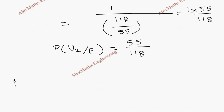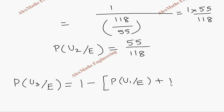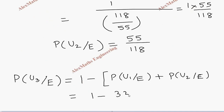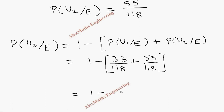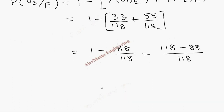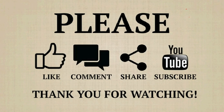For the third part, we don't need to repeat the full calculation. We use the complement: P(U3|E) = 1 - [P(U1|E) + P(U2|E)] = 1 - [33/118 + 55/118] = 1 - 88/118 = (118 - 88)/118 = 30/118.